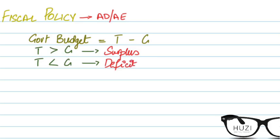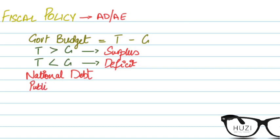Now let's talk about another key term: national debt. National debt is basically the accumulated budget deficit that occurs over many years. So if the budget deficit has been occurring for, say, five or six years, it accumulates into a national debt.